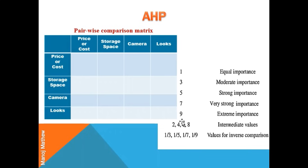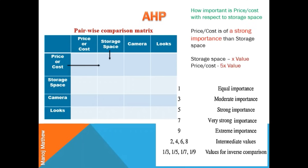The values in the pairwise matrix depend upon the decision maker, or the person who wants to buy the mobile phone. To determine the value of each cell, a question is asked: how important is price or cost with respect to storage space? For a person like me, price or cost is of strong importance over storage space. If storage space is given x value, then price or cost will be given 5x value.